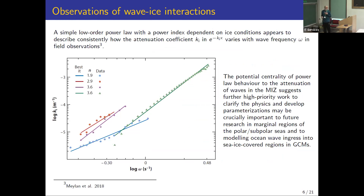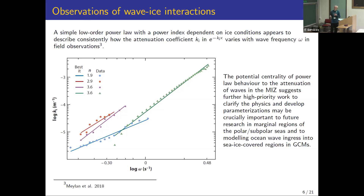These observations were collected together by Mike Meylan and published in 2018. It shows a very simple relationship between the attenuation coefficient — using just a simple exponential law — and the frequency omega: a power law relationship. The power is relatively low, as low as about two or up to about 3.6 in the few datasets analyzed. That's clearly going to be a very important part of any incorporation of wave-ice interaction into a GCM, because it's a simple parameterization — though it's empirical at the moment.